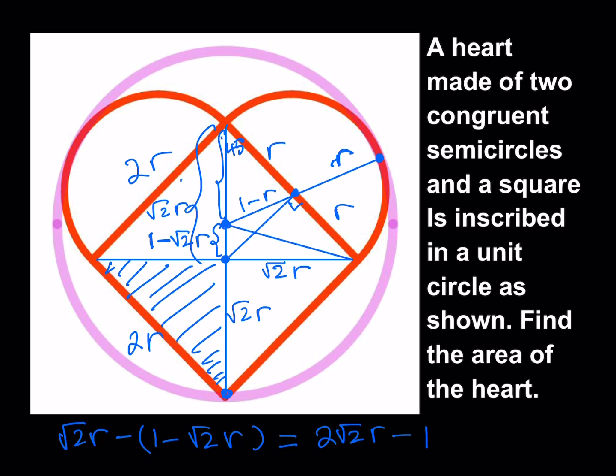So that length is 2√2R minus 1. Now here's the triangle I want you to focus on. We have a triangle with one angle of 45 degrees. On the next slide, I'm going to copy that triangle, make it bigger, and we'll work on it — that's going to be our solution method. Stay tuned.